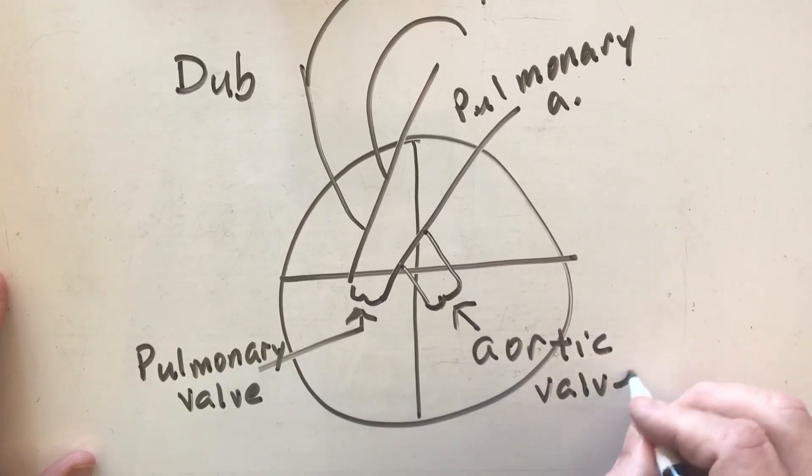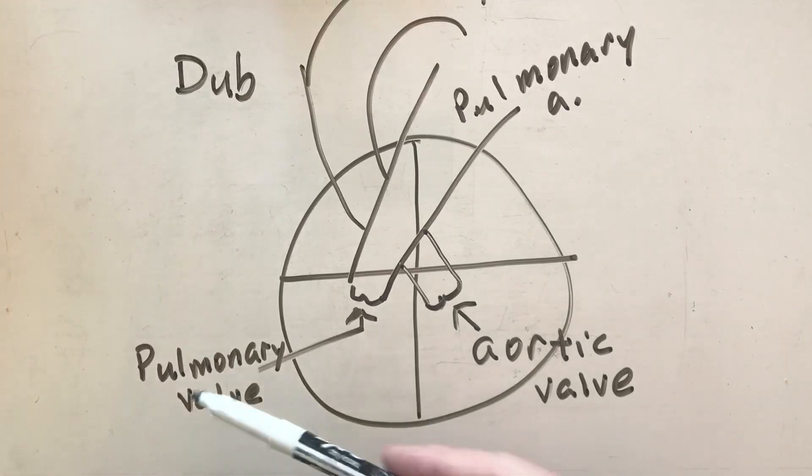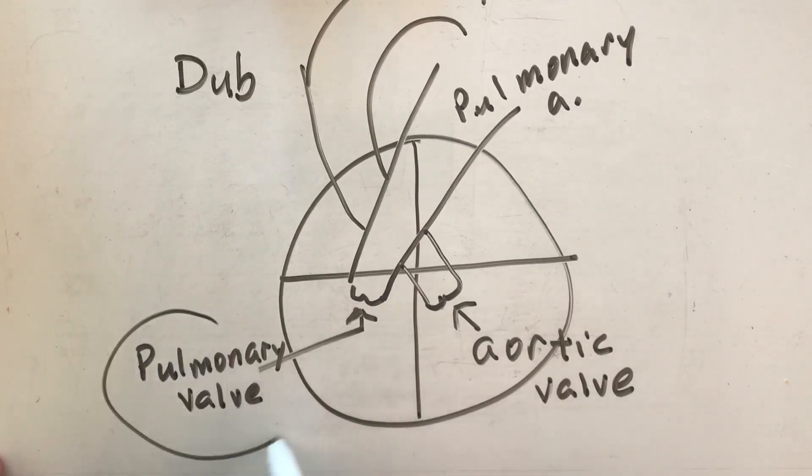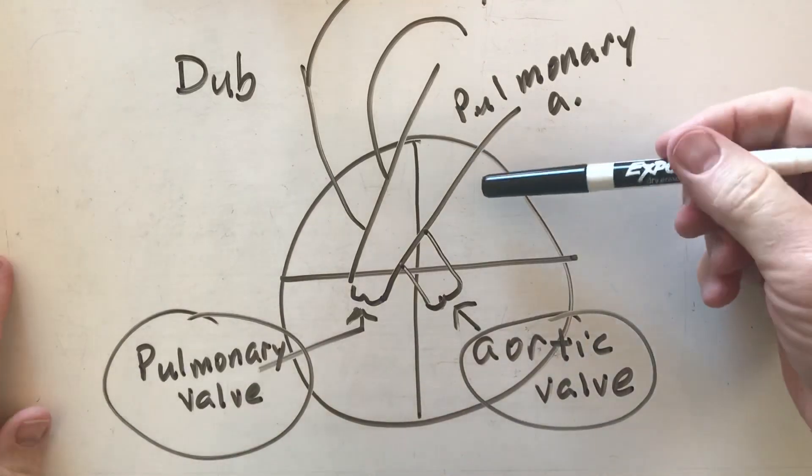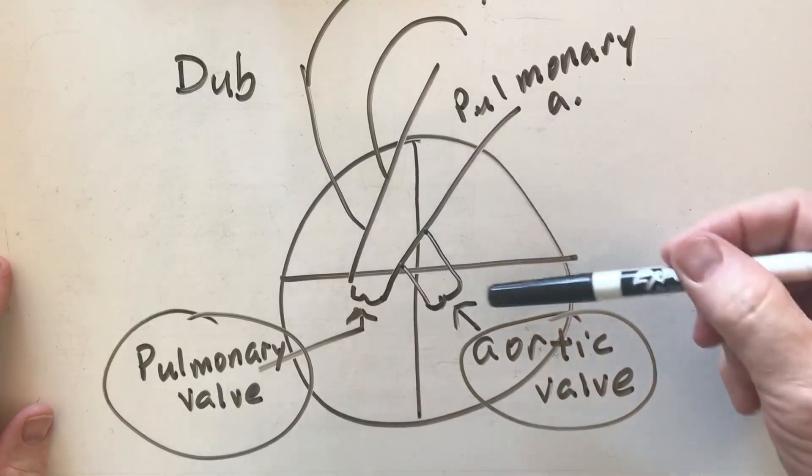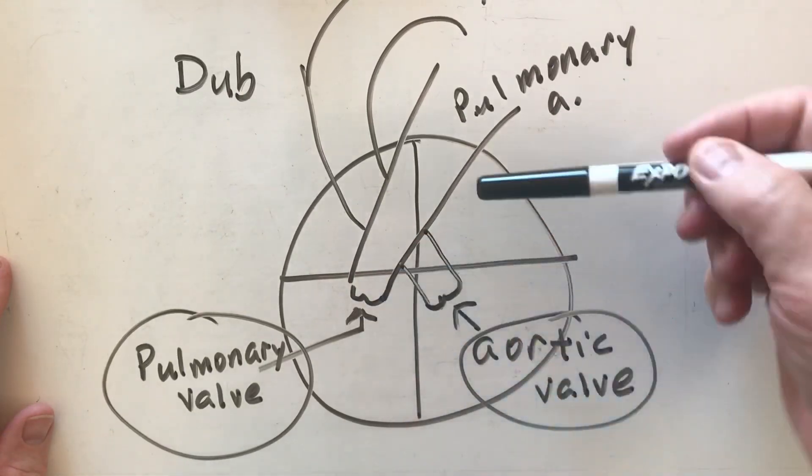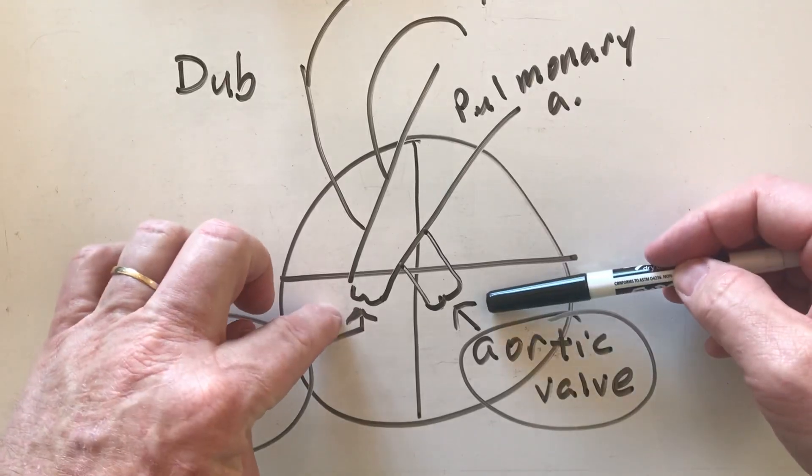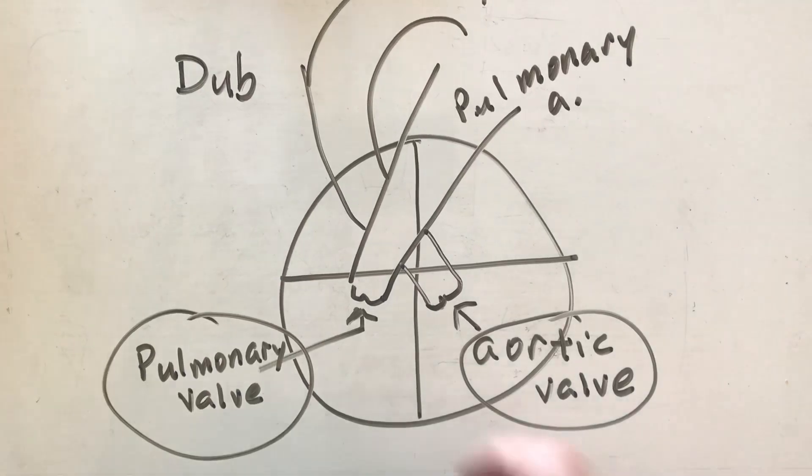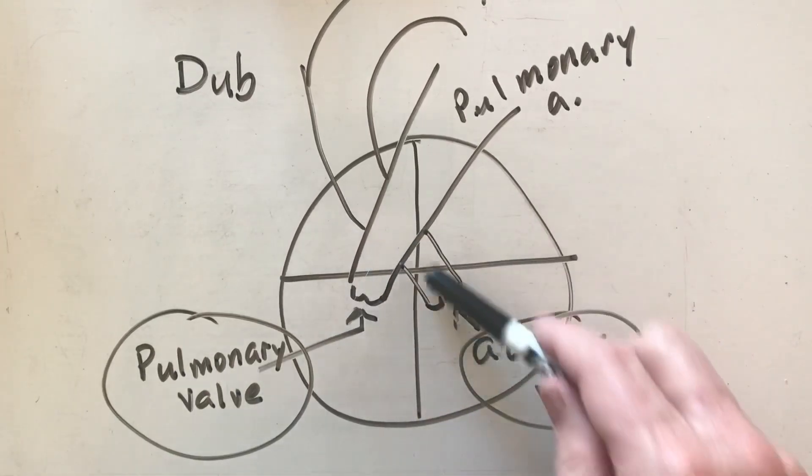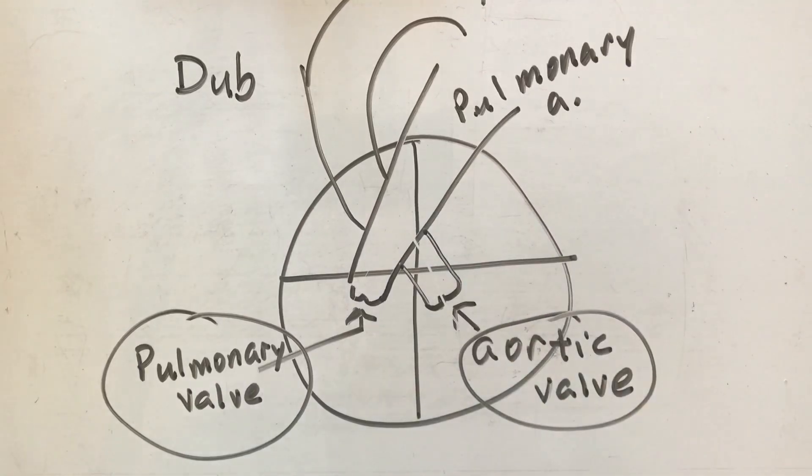So the aortic valve and the pulmonary valve make up the dub sound. Now remember, what we need to do is we need to pump blood from the atria into the ventricles. So the blood goes from the atria into the ventricles, and then when the valves close, that's when you hear the lub sound. And then as it pumps out into the respective arteries, you hear the dub sound. And that's the lub-dub sound that you hear.